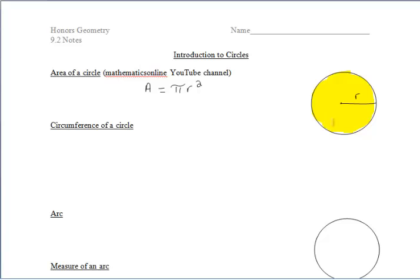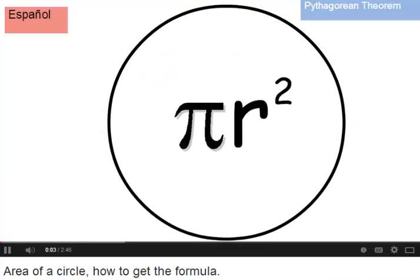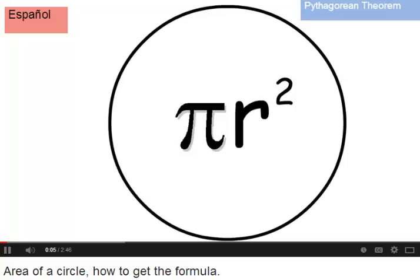I'm going to narrate over this demonstration. Keep in mind the area of a circle is the space inside of the circle. But where does pi r squared come from? Let's start off with a circle.